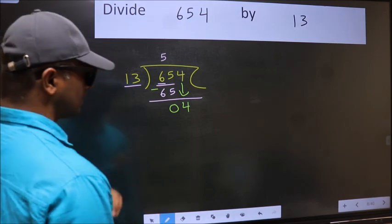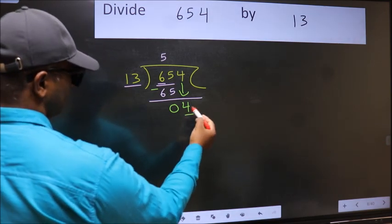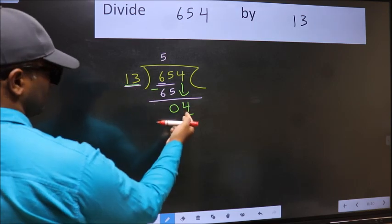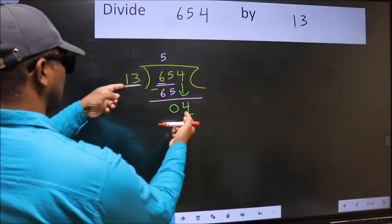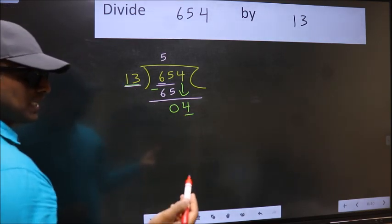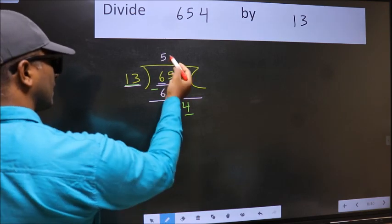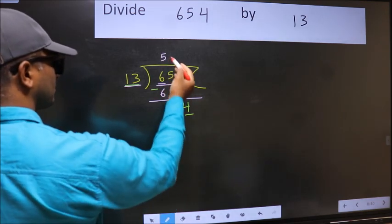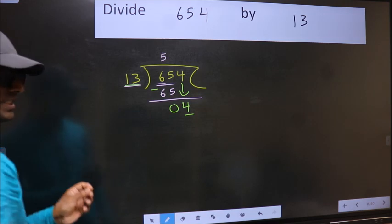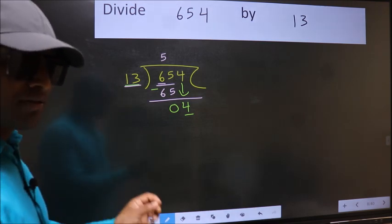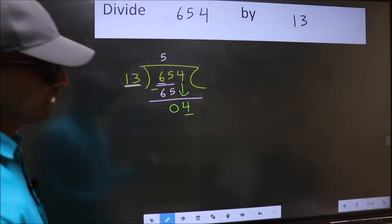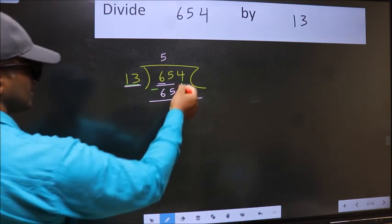The mistake is this: here we have 4 and here 13. 4 is smaller than 13, so what many do is they directly put dot, take 0, which is wrong. Why is it wrong? Because just now you brought this number down...